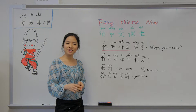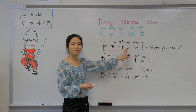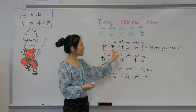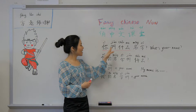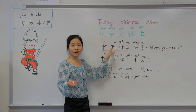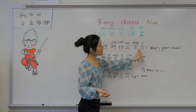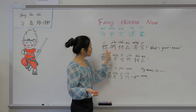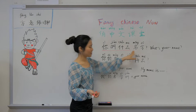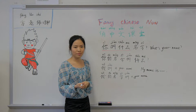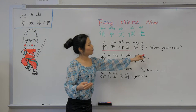To ask 'what's your name?' in Mandarin, you can say: 你叫什么名字？ 你 means 'you', 叫 means 'to be called', 什么 means 'what', 名字 means 'name'. So 你叫什么名字？ translated into English means 'What's your name?'